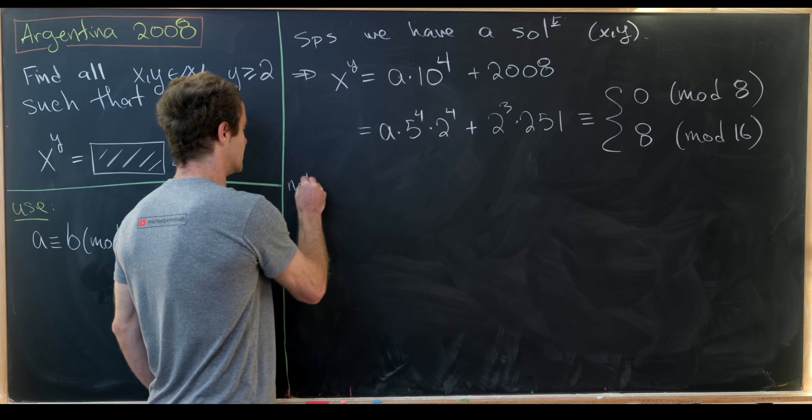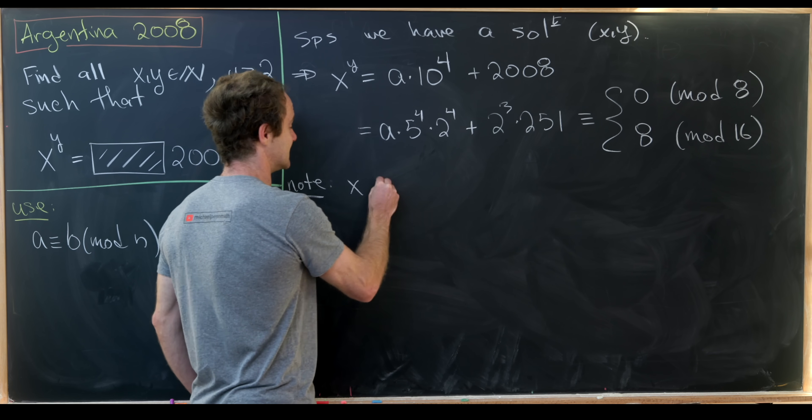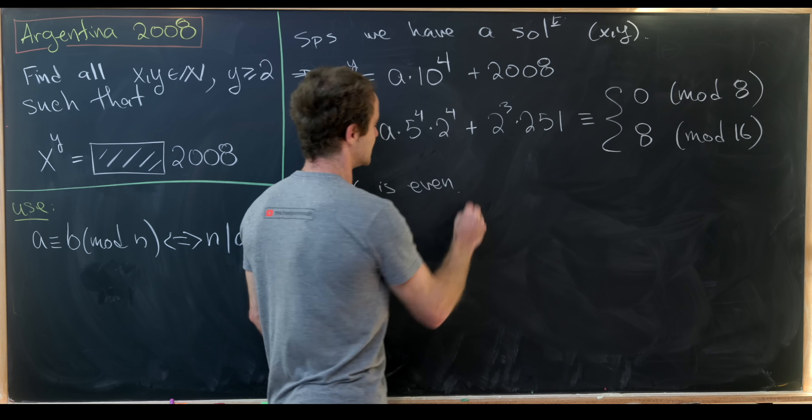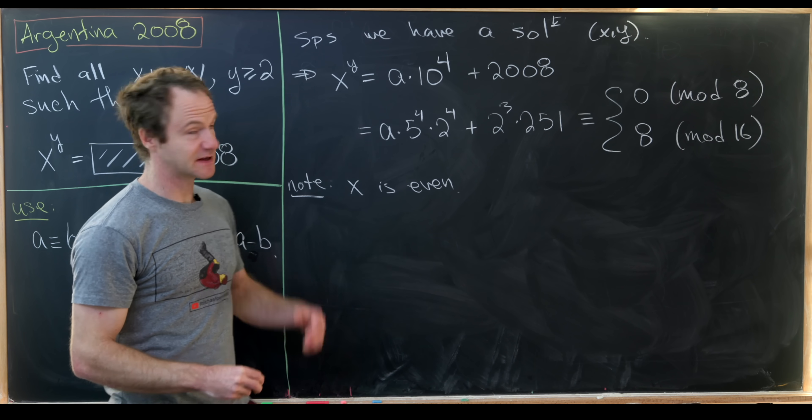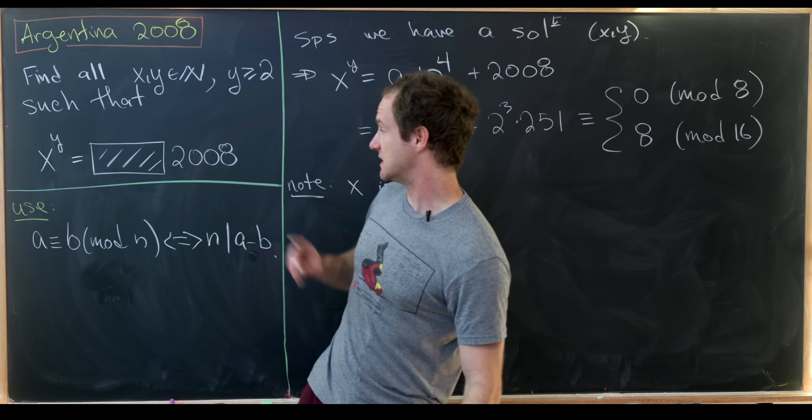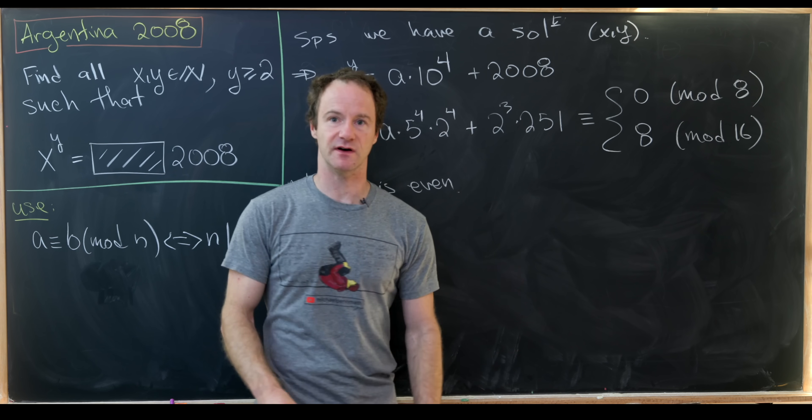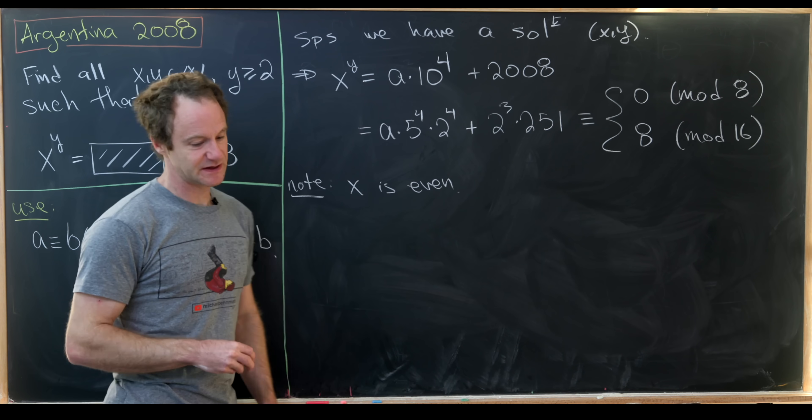So let's also note that x is even. That's pretty clear because the right hand side is even, and if we're taking a power of an odd number that'll always be odd.